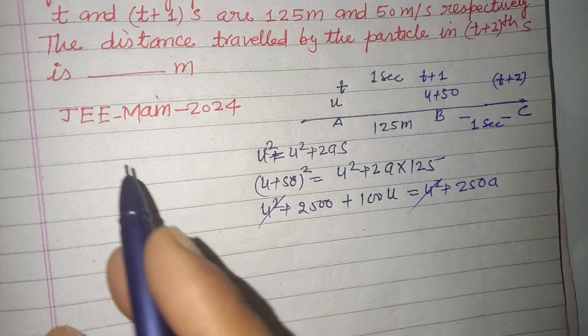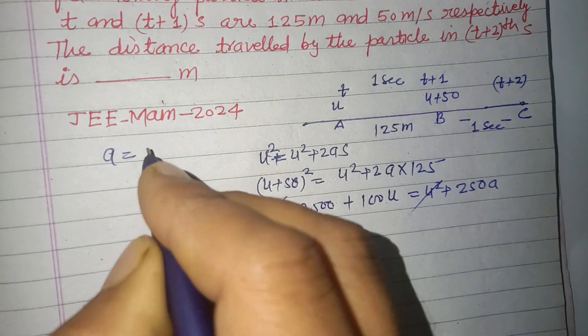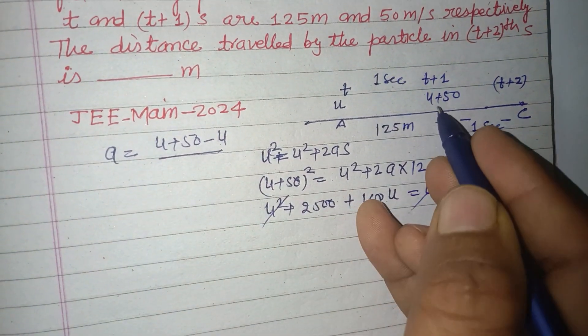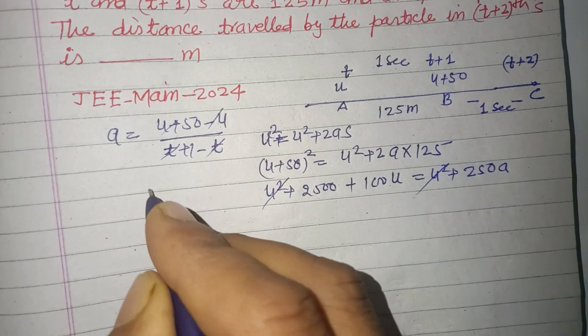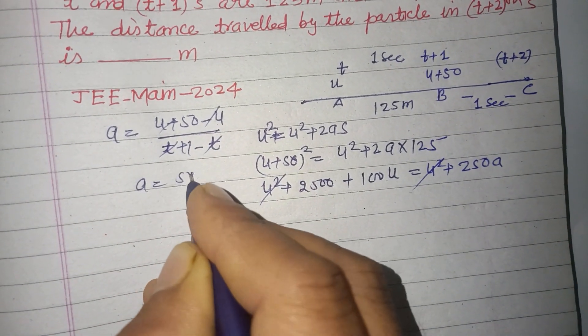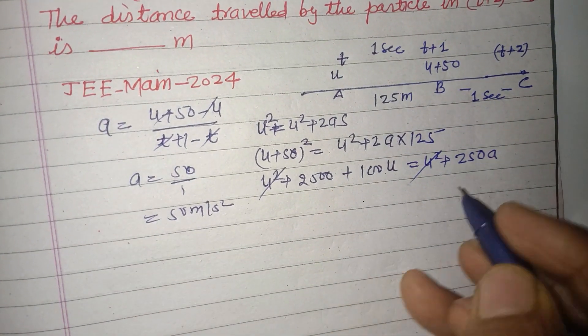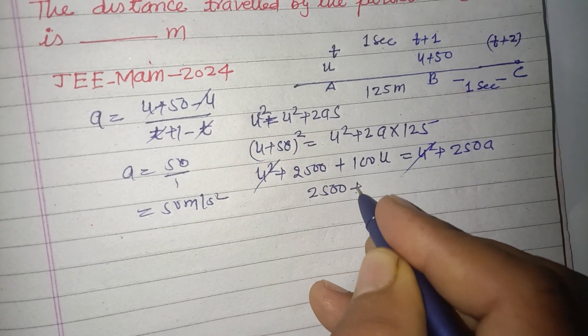Here acceleration can be calculated as change in velocity: (u + 50 - u) / change in time. Time is t plus 1 minus t, so t cancels and u cancels, equal to 50 over 1, that is 50 m/s².